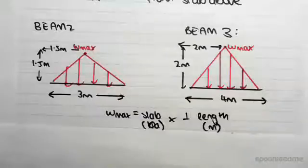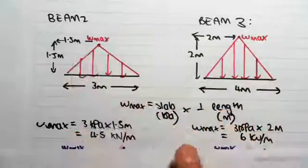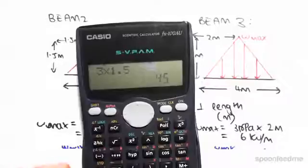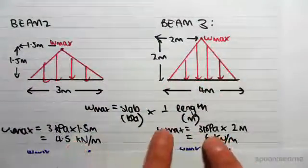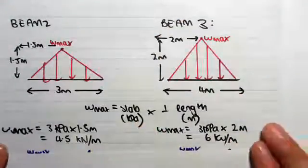So we're going to go W max for this triangle case here will be 3 kPa times by the perpendicular height of 1.5 meters, so 3 by 1.5 gives us 4.5. And W max for this triangle will be the 3 kPa multiplied by perpendicular length 2 meters, giving us 6 kN per meter.